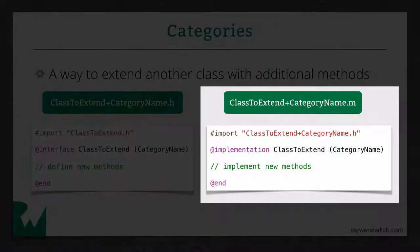Then over to the .m file, you import the header file, and you do the same thing as in the header file, but instead of @interface, you use @implementation, and then you just implement the methods.